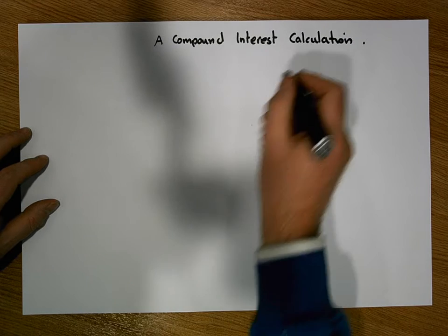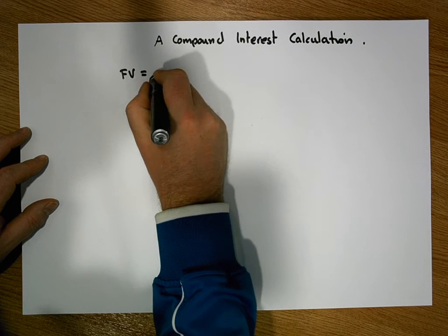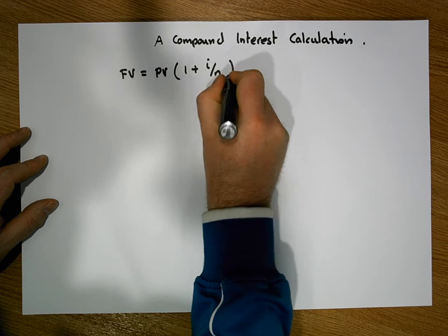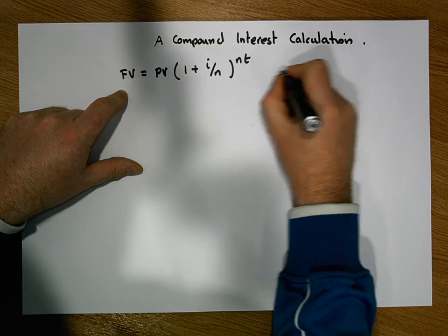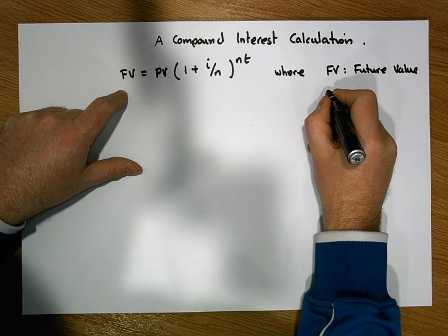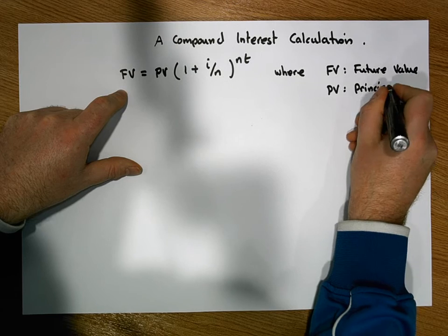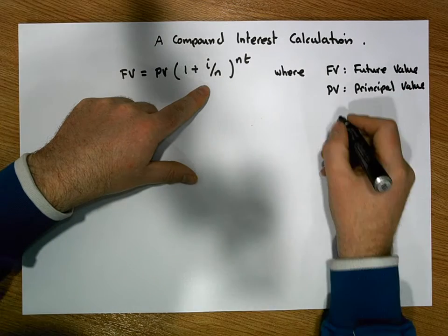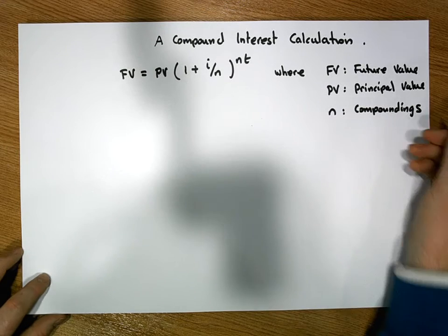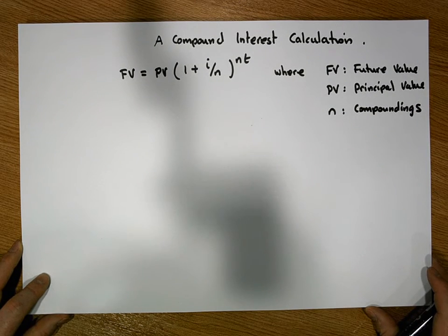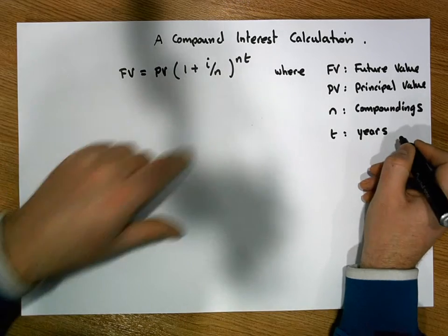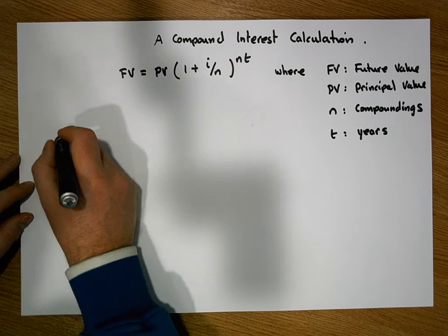Let's reflect on our general formula for compound interest. The future value of an investment is simply equal to the principal value times one plus i over n, raised to the power of n times t. Here, FV represents the future value, PV represents the principal value — how much was put in at time zero. N represents the number of compoundings, whether annual, quarterly, monthly, or semi-annually, and t represents the number of years the investment is being made for.